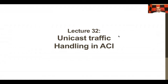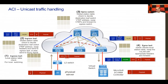Hello fellow ACI experts. In this lecture we are going to take another example of a unicast traffic packet or frame traveling from an endpoint to another endpoint through the fabric, talking about the tables that will be consulted based on what we discussed in the previous lecture. We have a physical server connected to a Layer 2 switch — that could be a Nexus 5K or Nexus 6K — which is then connected to the ACI leaf switch.